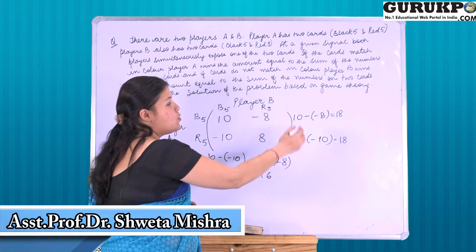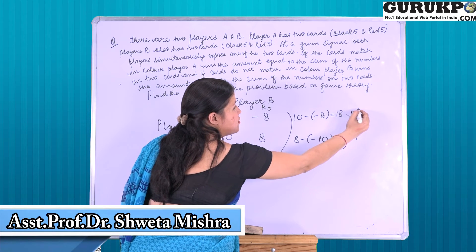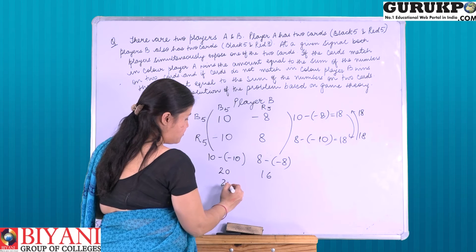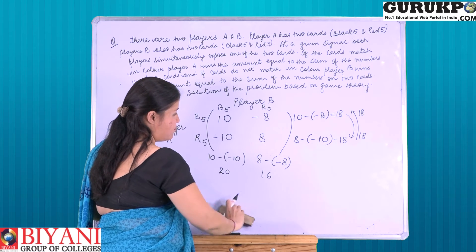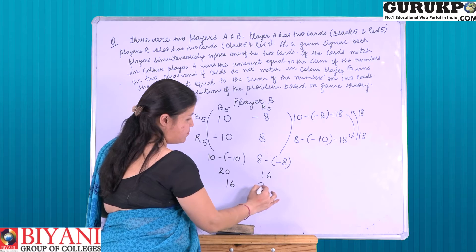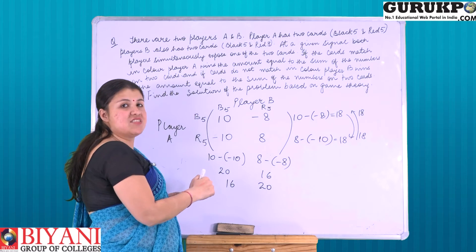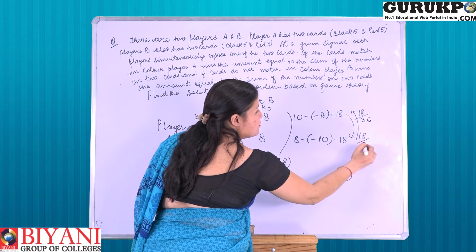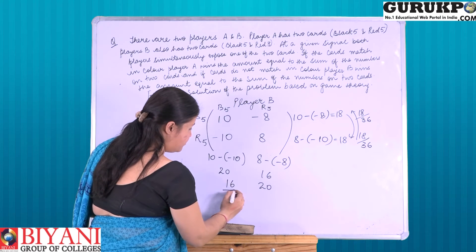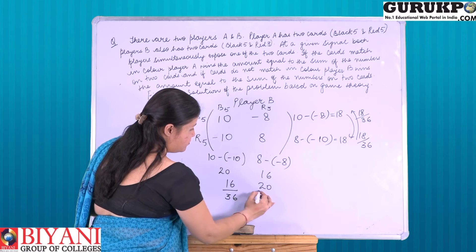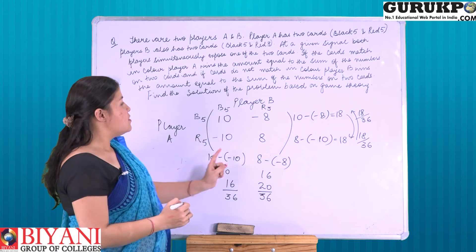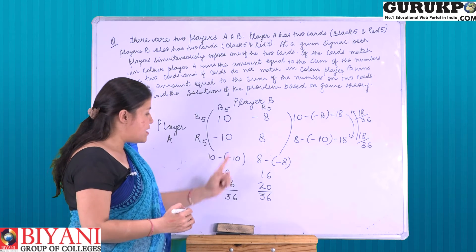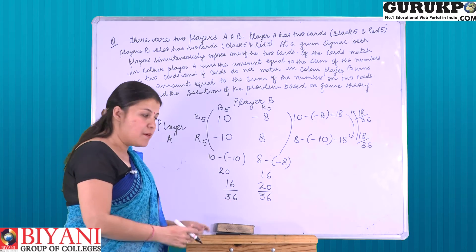Now we are going to interchange the values. After interchanging the values, we add them and place the totals below. The values derived give the strategy for player A, and the other values derived give the strategy for player B.